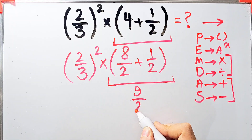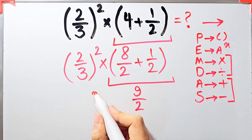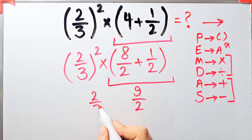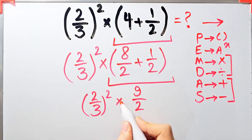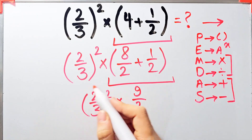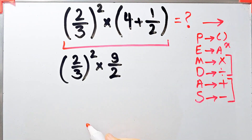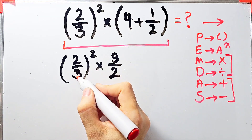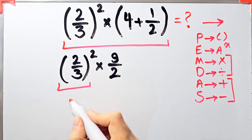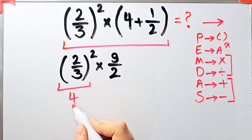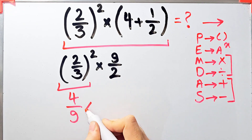The question is now two over three, all to the power of two, then times nine over two. We have exponent and multiplication — first we simplify the exponent. Two over three to the power of two equals four over nine.